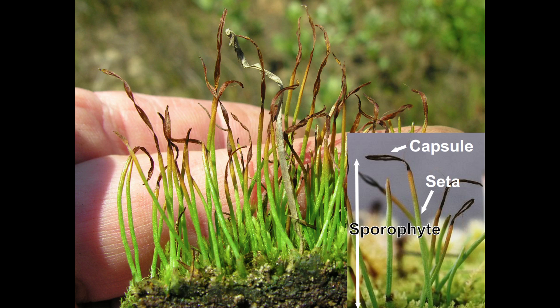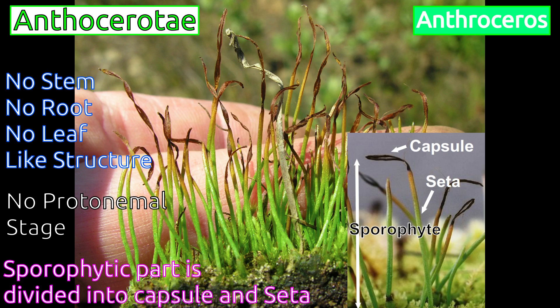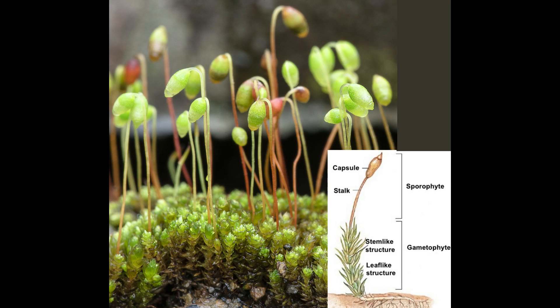In the Anthocerotae class of bryophytes, the sporophyte is differentiated into seta and capsule, but the plant cannot be differentiated into stem, root, and leaf-like structures. The capsule is the place where spores are stored. Plants in this class do not go through the protonema stage during reproduction. Anthoceros plant is an example of an Anthocerotae bryophyte.